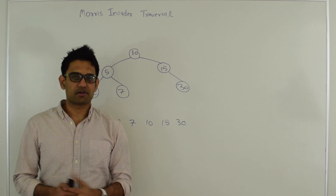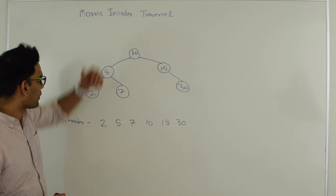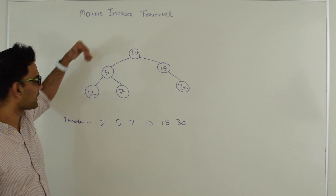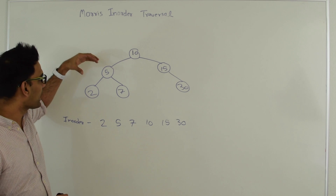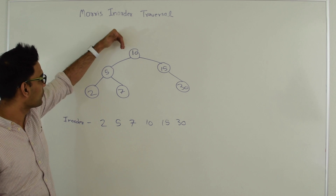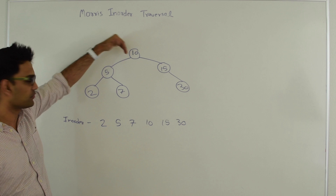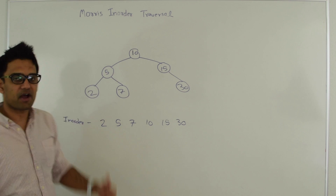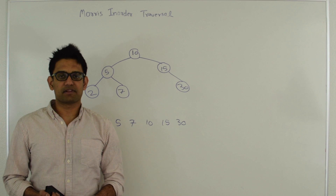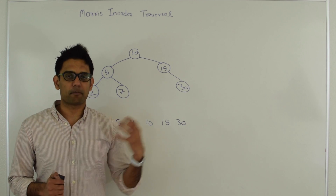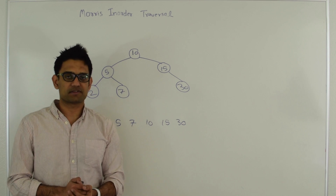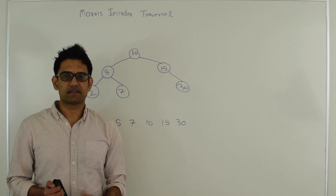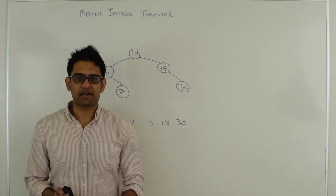So why do we need a stack or recursion? Because when going from 10 to 5 on the left side, we need a way to come back to 10. Similarly when going from 5 to 2 we need a way to come back to 5. This is what we achieve with a stack — we keep pushing nodes onto the stack and popping them back — and recursion does the same thing automatically.